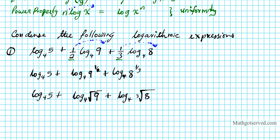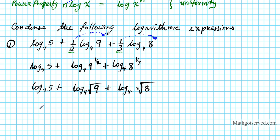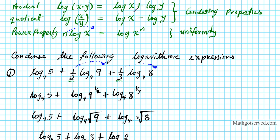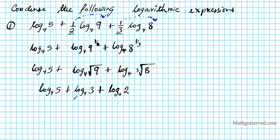Now let's simplify. It becomes log base 4 of 5, plus log base 4 of the square root of 9 — which is 3, because 3 times 3 is 9 — and the cube root of 8 is 2, because 2 to the third power is 8. Now we have uniform logs: log base 4, log base 4, log base 4 of different arguments. Now we can apply the product property — since we're adding the logs, we take the product of the logarithmic arguments: 5, 3, and 2.